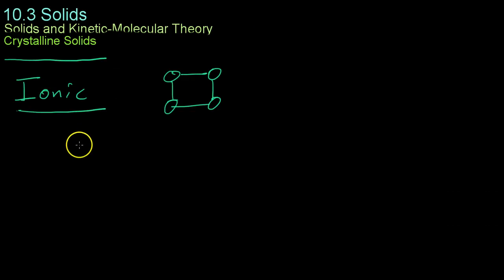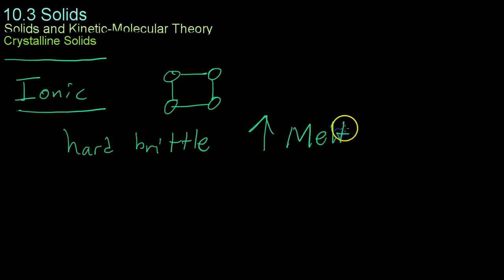And because of this reason, ionic bonds tend to form crystals that are very hard and brittle with very high melting points. This is because it's very hard to separate the actual atoms from one another when there's a strong positive and negative charge associated with the end of each molecule.